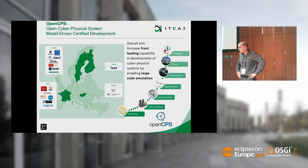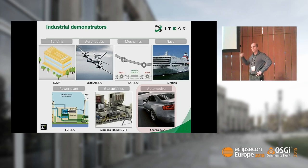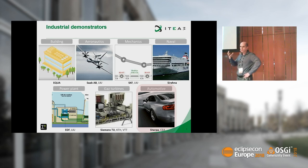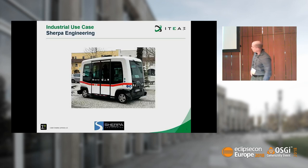There are quite a lot of commonalities within these different domains: building, aeronautics, mechanics, naval, automotive, gas turbines, and power plants. All of those are heavily relying on physical simulation — simulation of the environment and how our system is behaving within an actual environment. To give you some understanding of what I'm talking about, I'll give you a brief overview of the SHARPO demonstrator, which is an automotive simulation scenario that includes multiple domains. In this sense it's a hybrid simulation, because multi-domains are simulated in parallel.